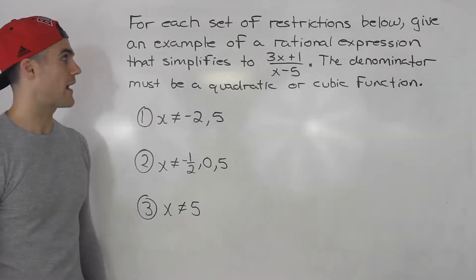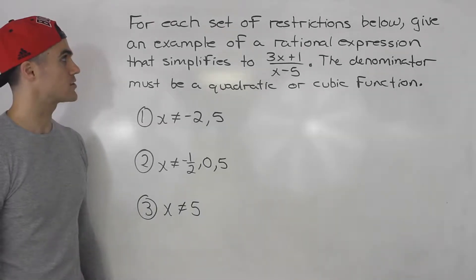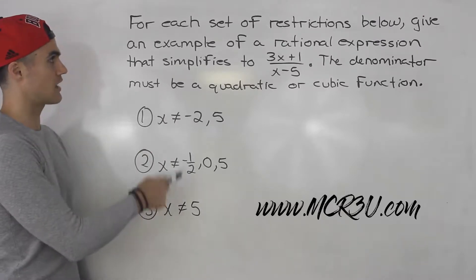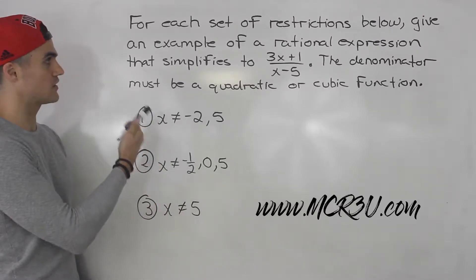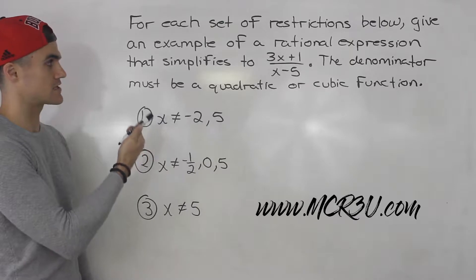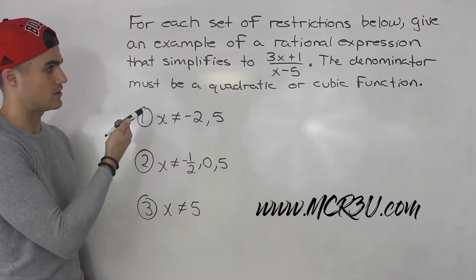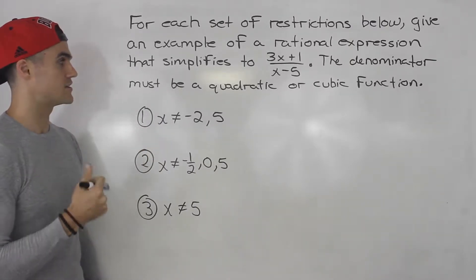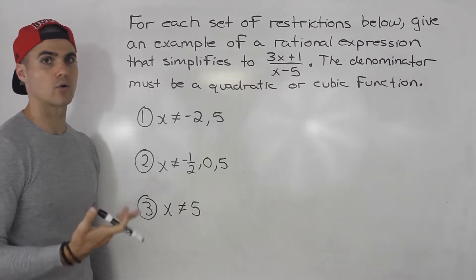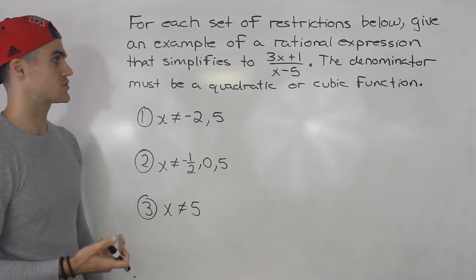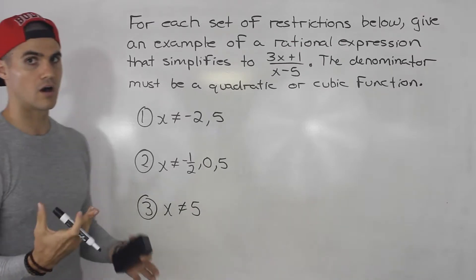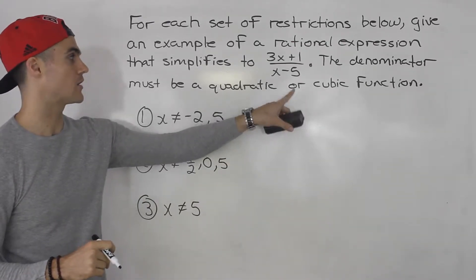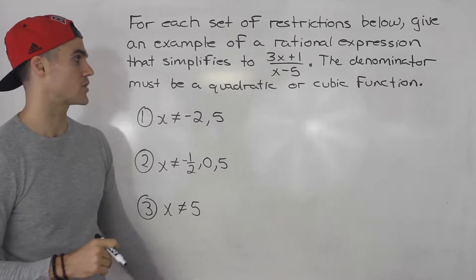What's up guys? Patrick here. Welcome back. In this question, we're given a set of restrictions and for each set of restrictions we have to give an example of a rational expression that simplifies to (3x+1)/(x-5). The restriction is that the denominator must be a quadratic or cubic function.